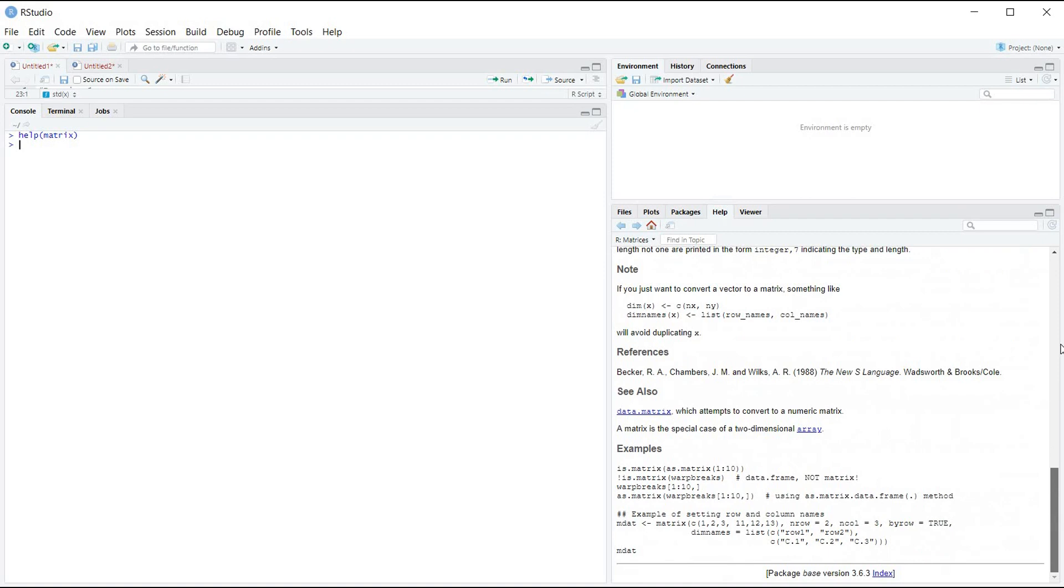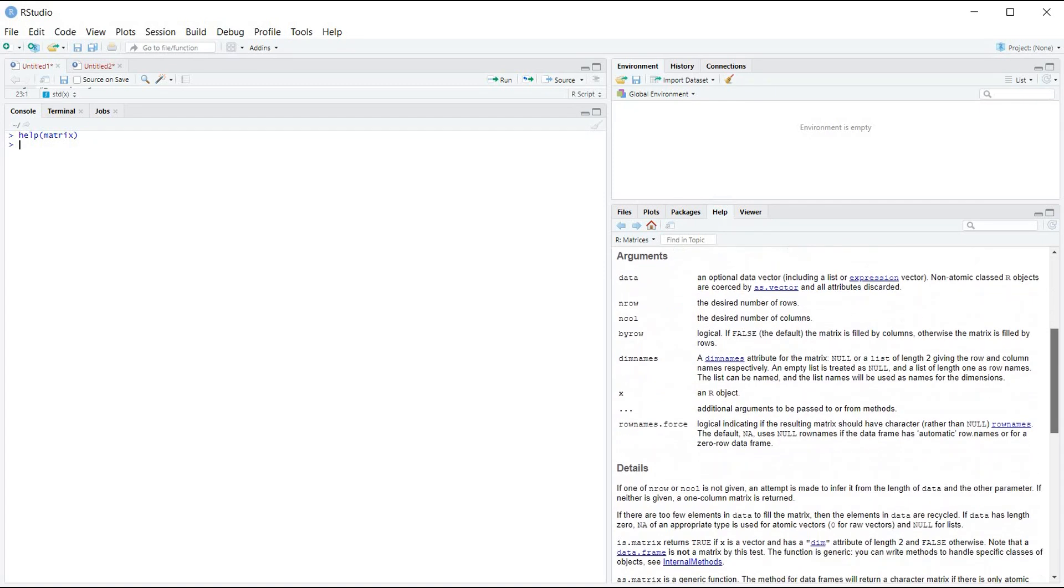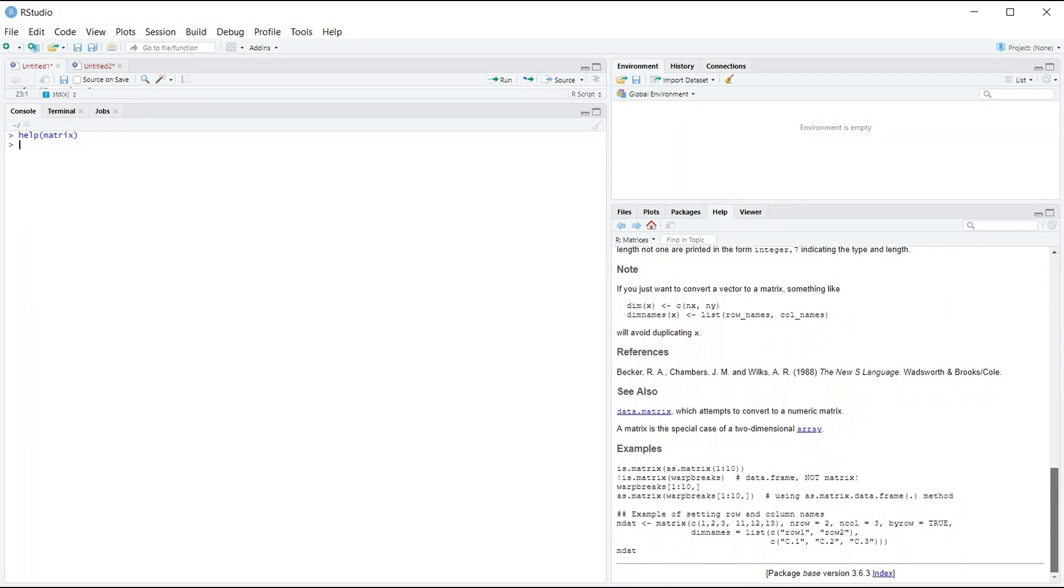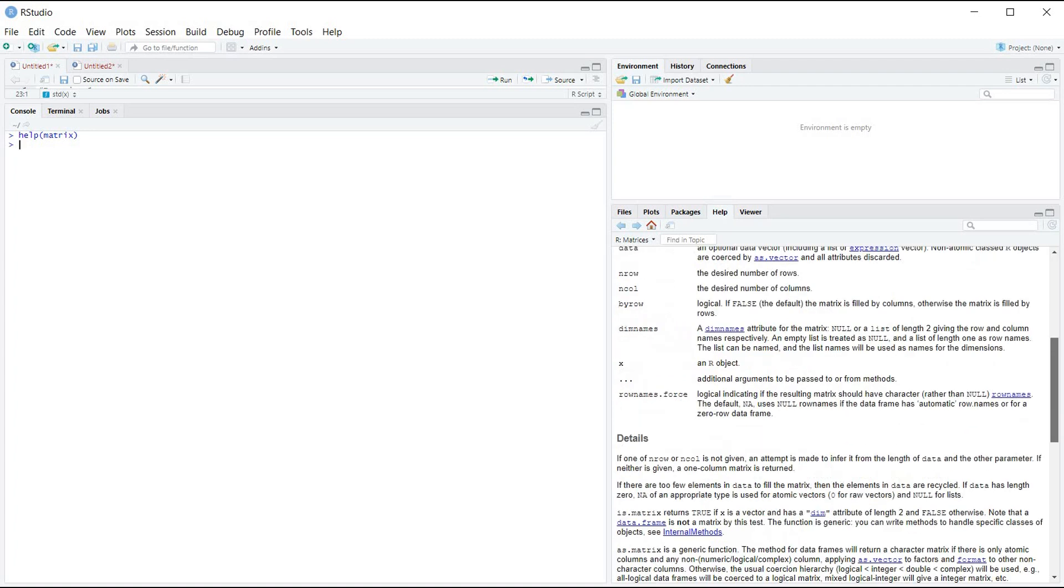How to create the arguments, details and some examples. So if you want to know anything about a specific function, just use the help function and put your function name inside round brackets and hit the enter key.